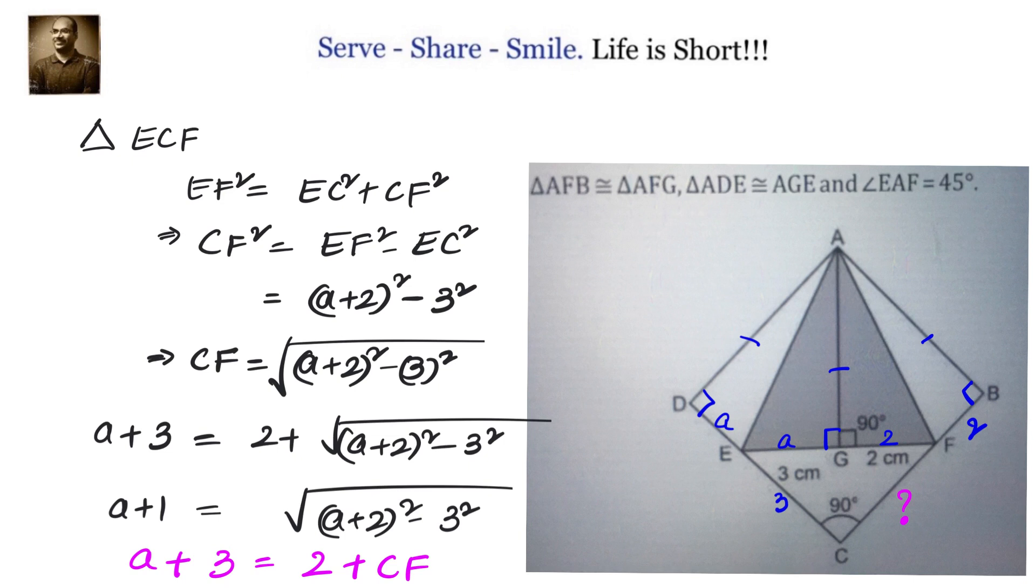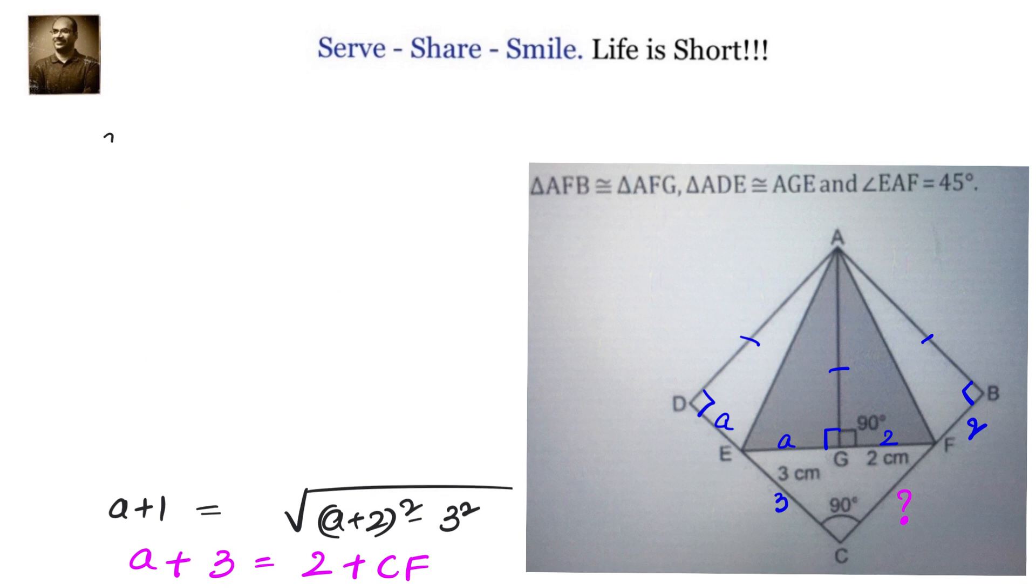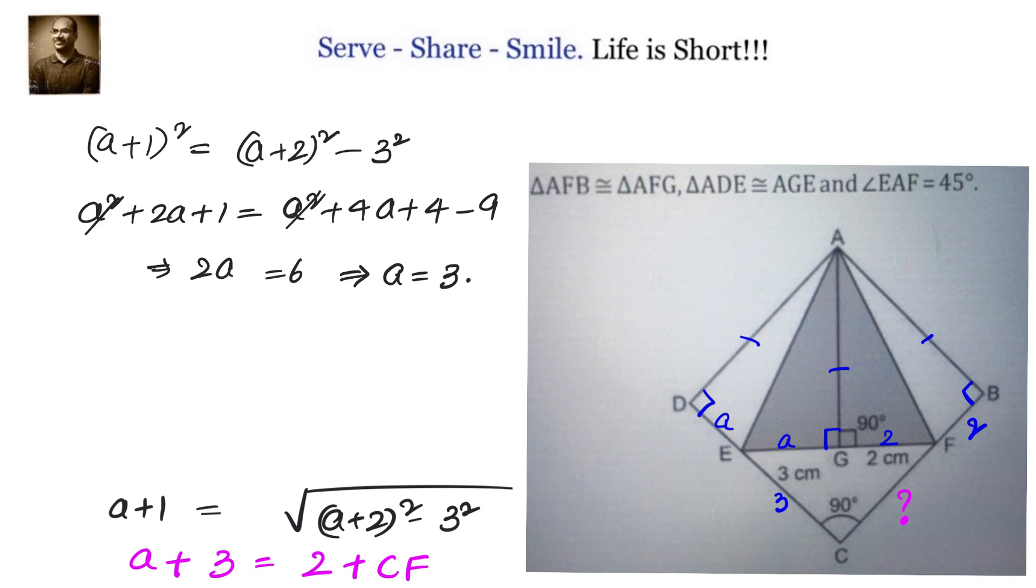Let us simplify that we will have A plus 1 equals to square root of A plus 2 whole square minus 3 square. Now, let us square this on both the sides and try to find out the value of A. Squaring on both sides we will have A plus 1 whole square equals to A plus 2 whole square minus 3 square. We can simplify this A square plus 2A plus 1 equals to A square plus 4A plus 4 minus 9. We have A square A square cut. We will have 2A equals to 6 which will give us A equals to 3 units. Once we got A equals to 3 units we can immediately write down therefore side of the square DC equals to A plus 3 which is equals to 3 plus 3, 6 centimeters.